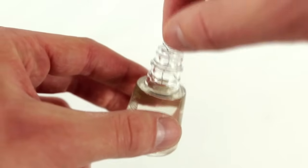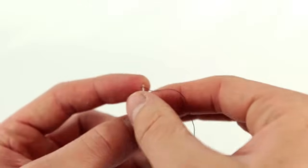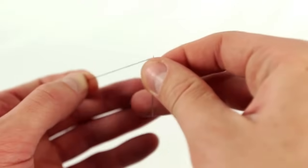Take the frayed end of your thread and dip it into some clear nail polish. When the polish dries you'll have a perfectly pointed thread that will effortlessly slip itself into position.